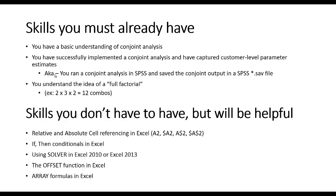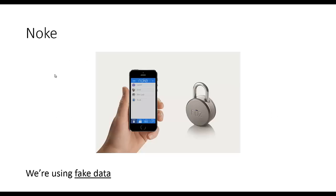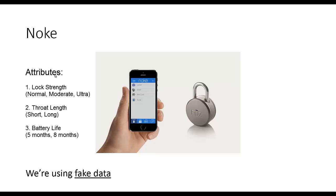For our motivating case, let's imagine we've conducted a conjoint analysis for a product called NoKey — a product I found on Kickstarter. Using fake data, we decided to study different iterations of the NoKey product. First, we considered three different levels of hardness for the key: normal hardness, moderate hardness, or ultra hardness.